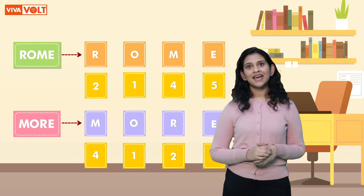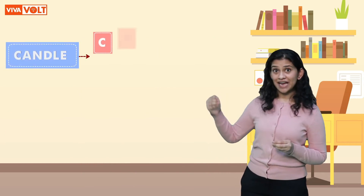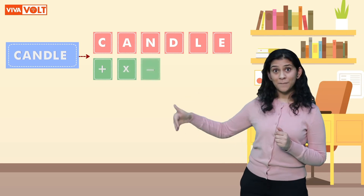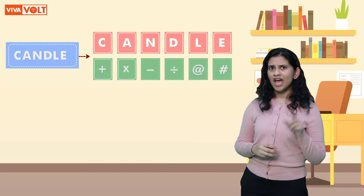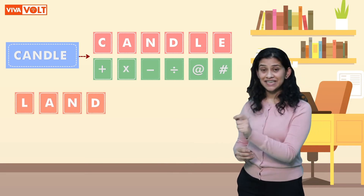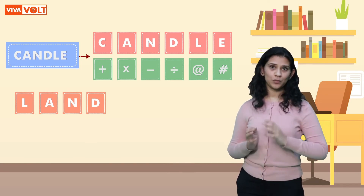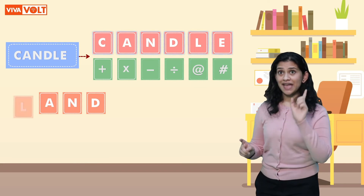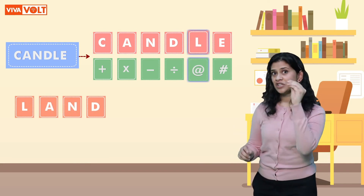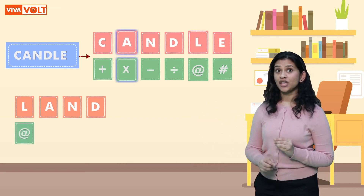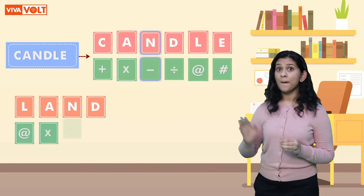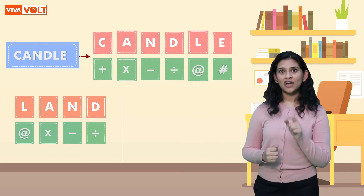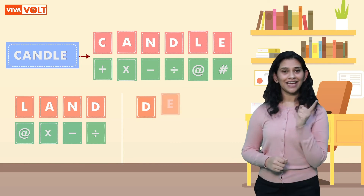Next, if the word CANDLE (C, A, N, D, L, E) is being written with these symbols — plus, multiplication, minus, division, at-the-rate, and hash — then how will you write LAND? We're going to use the similar pattern used for the previous example. The symbols are being denoted by respective letters. L is being denoted by at-the-rate, A by the multiplication sign, N by minus, and D by the division sign. So here we have the word LAND decoded.